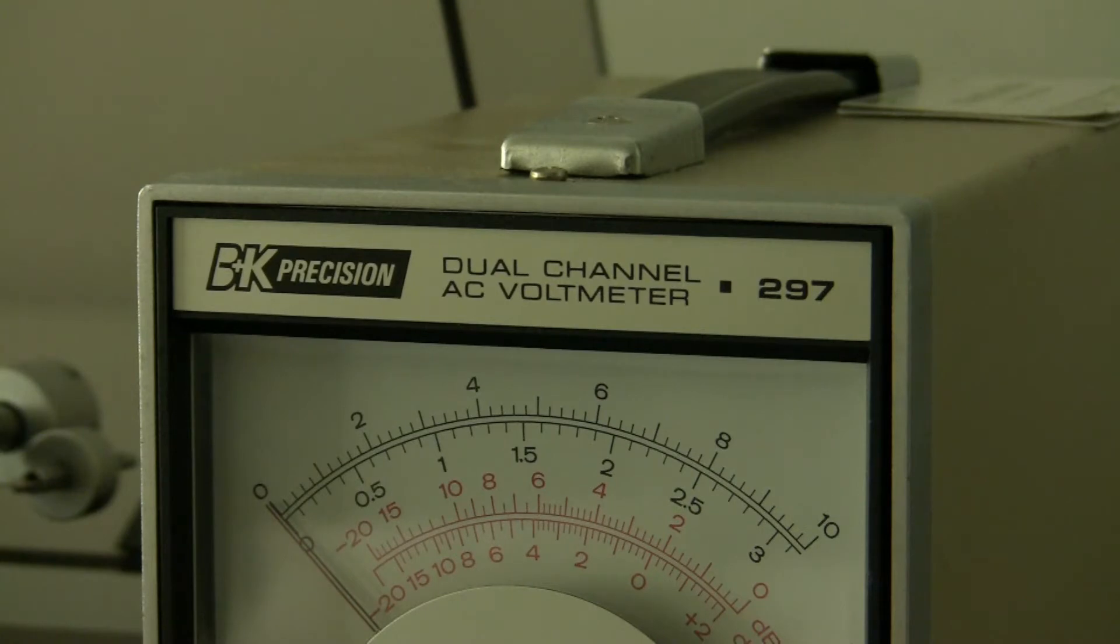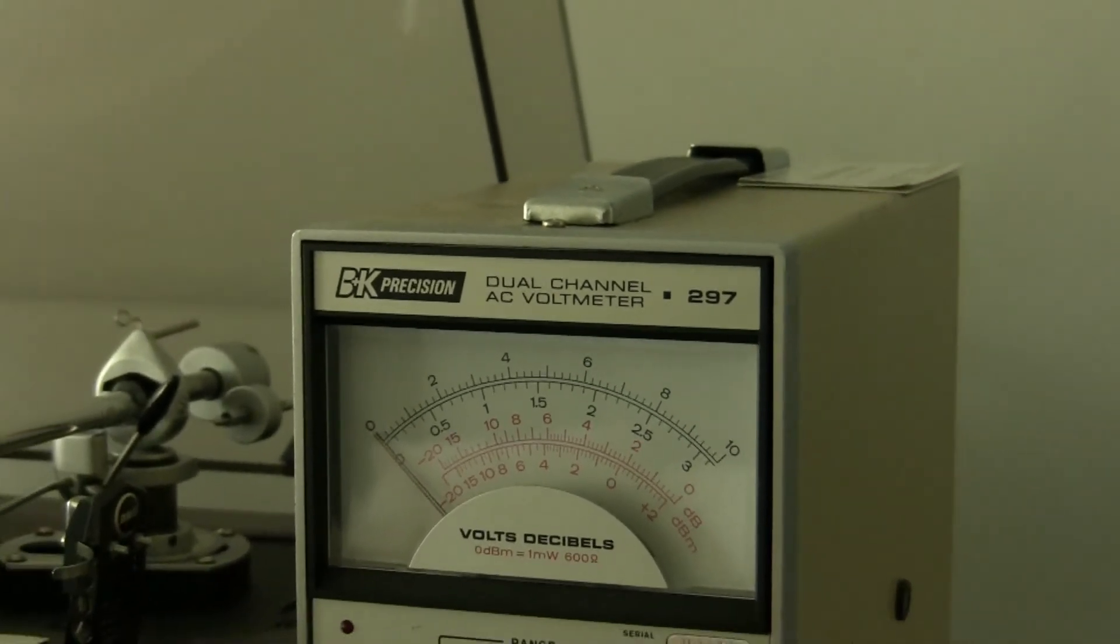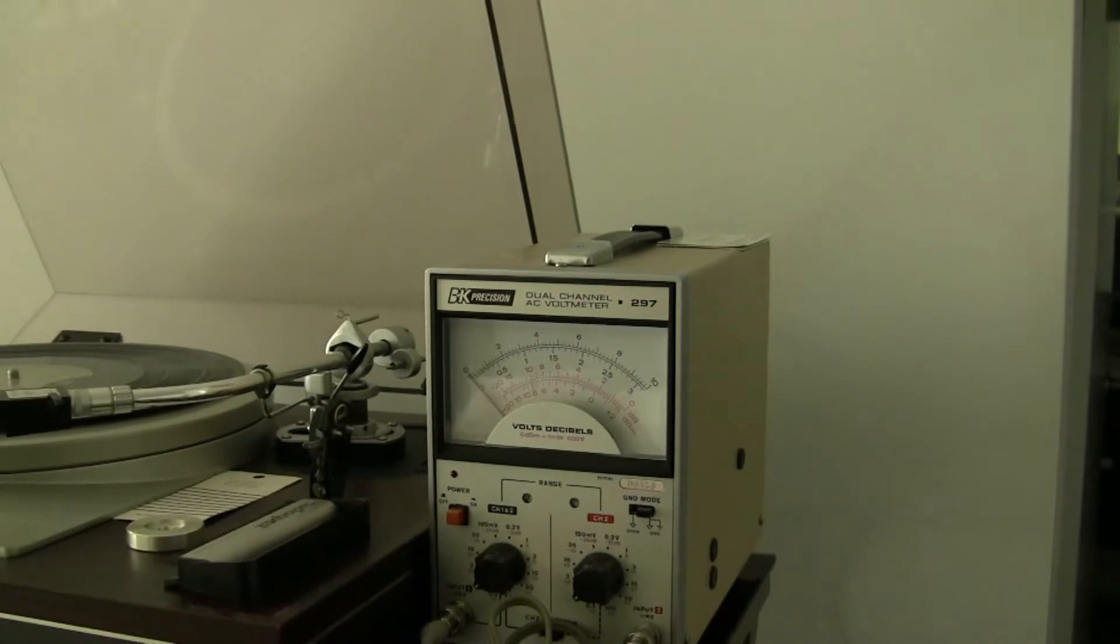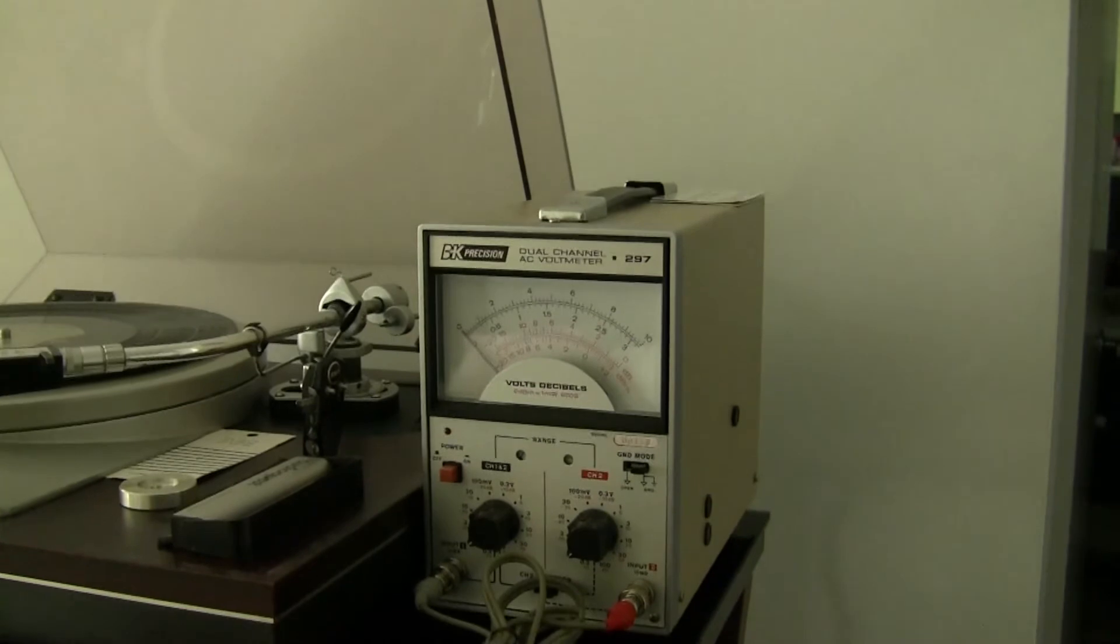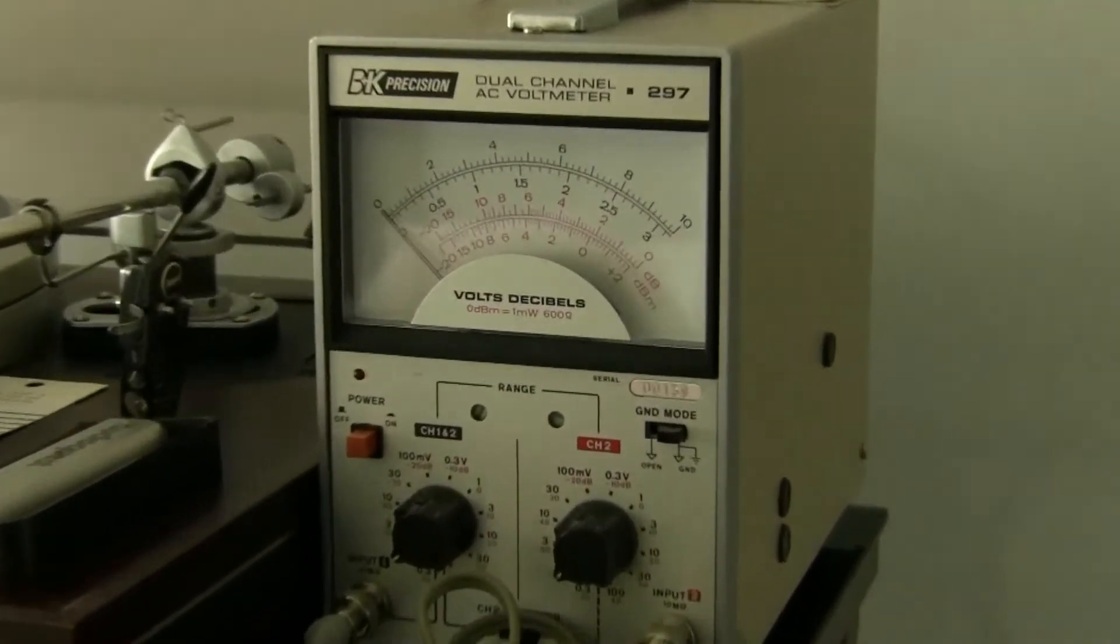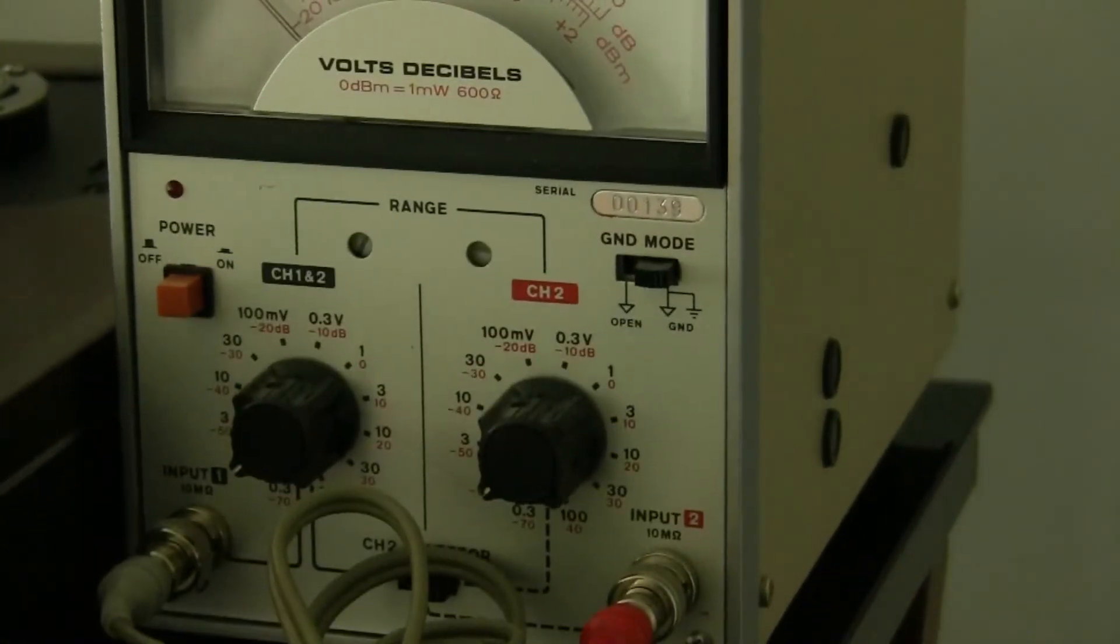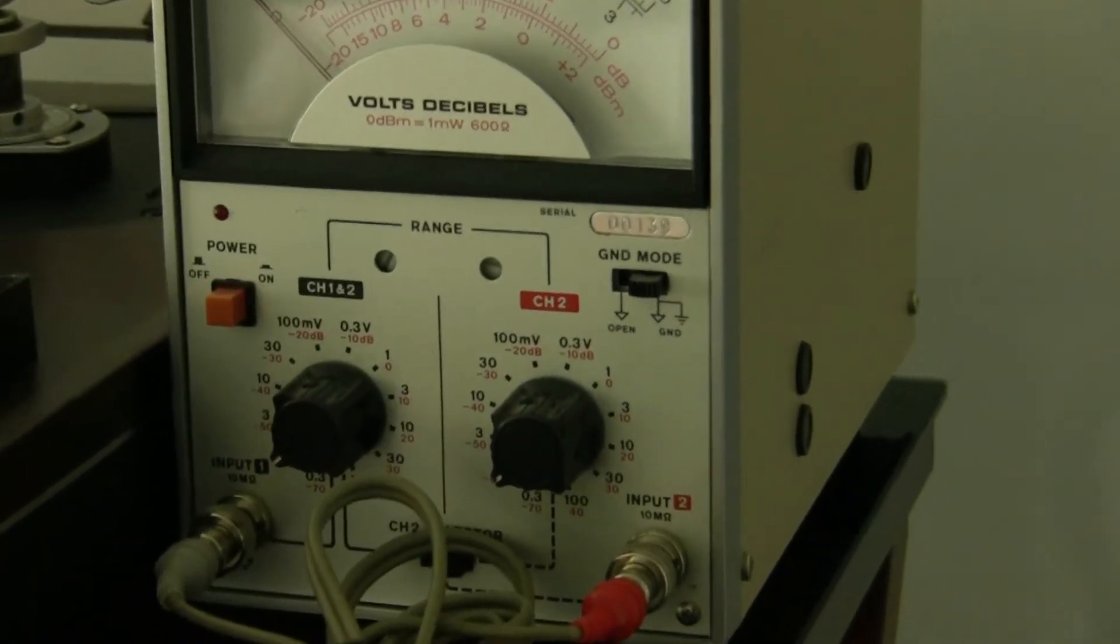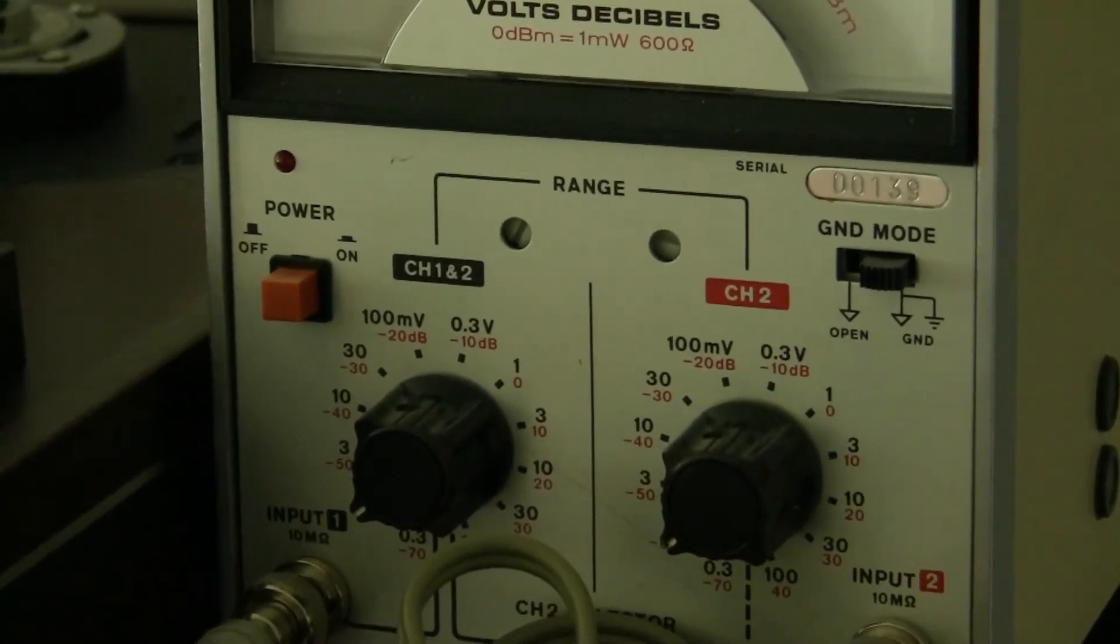What's special about this voltmeter is it has two indicators working on the same scale. Since this is a measurement tool, it has a wide range of measurement voltages that can even cover the low voltage levels of a cartridge like the TSD 15. The channels are conveniently marked as black and red so we can follow which channel is doing what independently.